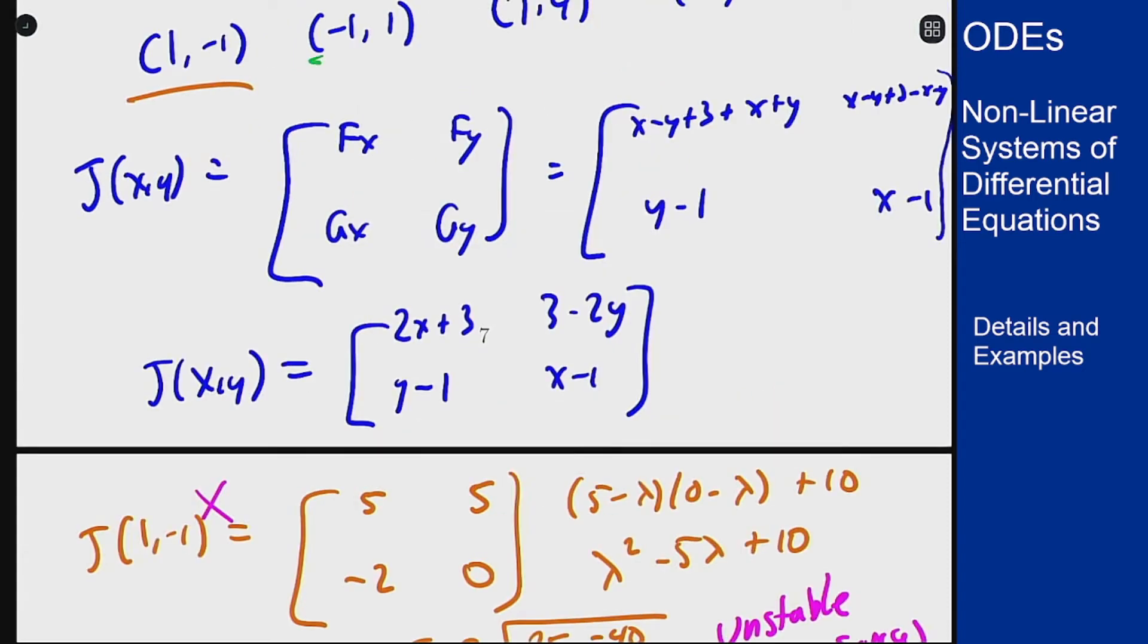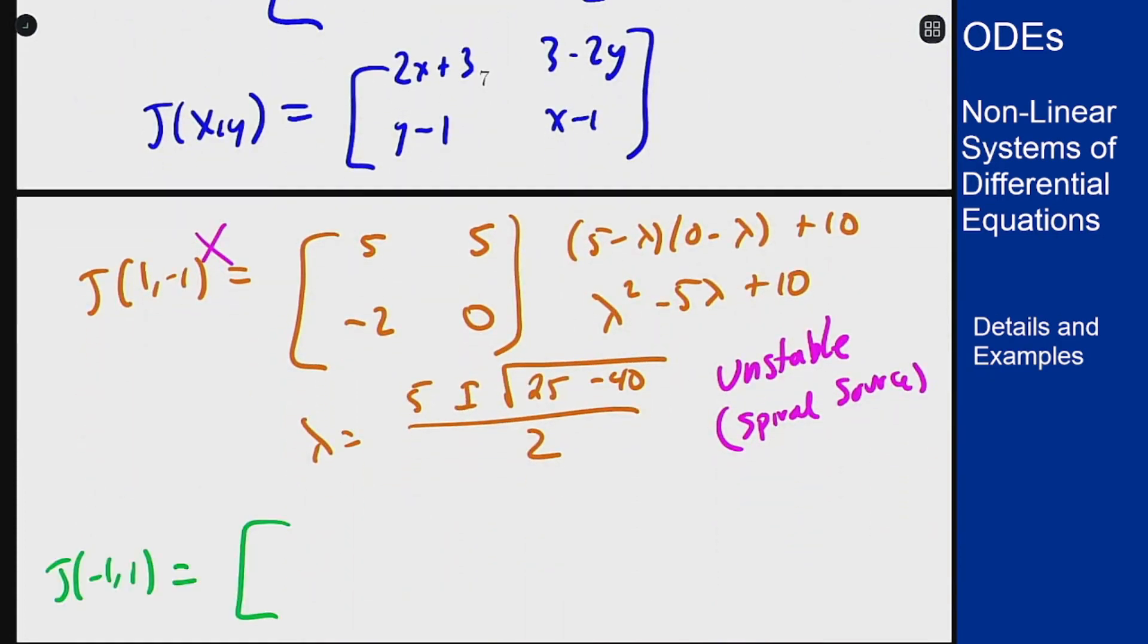Our next point was minus 1 comma 1. I get 1, 3 minus 2 is 1, 1 minus 1 is 0, and minus 1 minus 1 is minus 2. For this one, I can tell right off the bat the eigenvalues are 1 and minus 2. That's a saddle, which is still unstable. That also is not the correct answer.